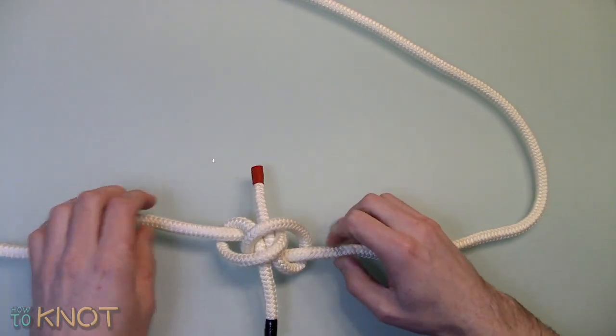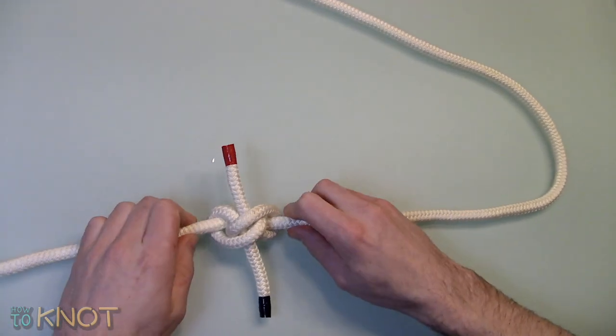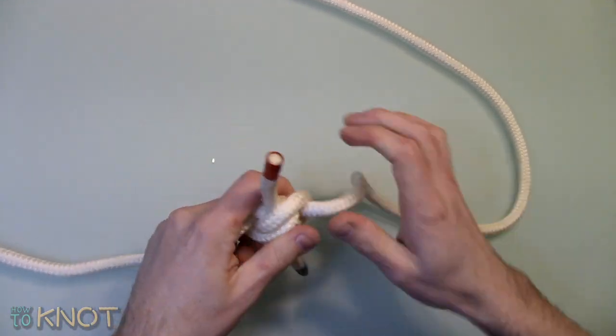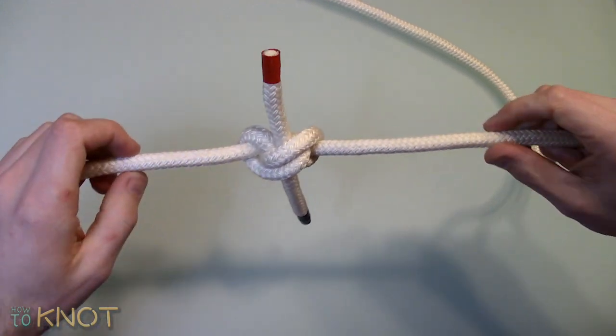As you can see this knot is basically based off two overhand knots and is stronger than some other knots such as the Fisherman's Bend, Sheet Bend and the Reef Knot.